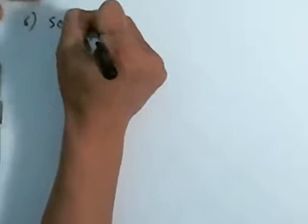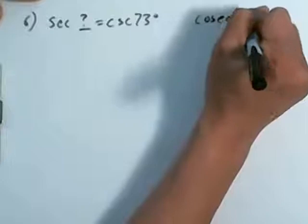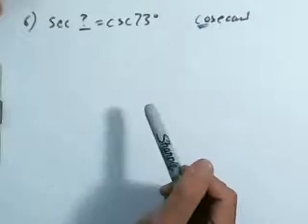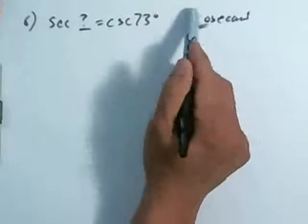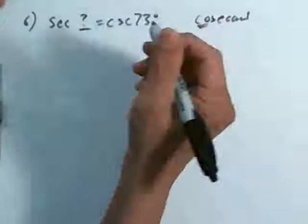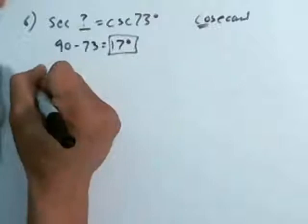Let's do number 6. This is: secant of what is equal to the cosecant of 73 degrees? The secant and the cosecant — the word 'co' stands for complementary functions. I had an epiphany — it stands for complementary functions. So the co stands for complementary. Therefore, the complement of 73 degrees is going to be 90 minus 73 degrees, which is 17 degrees. That was pretty easy. Don't forget, the word co means complementary.